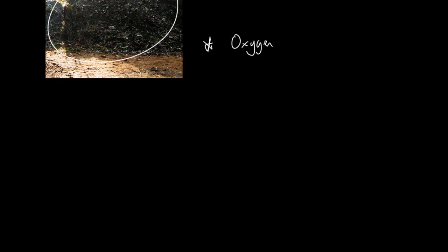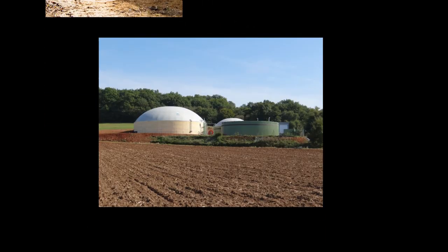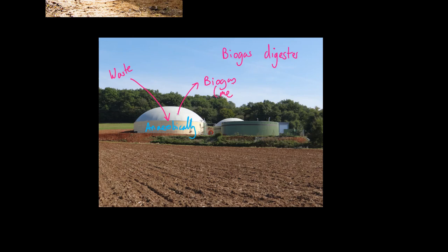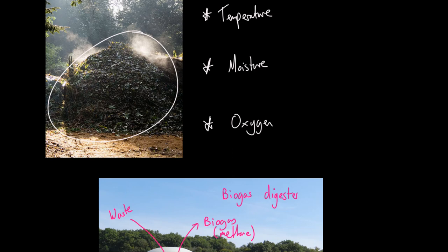That's important for lots of different reasons. For example, this is a biogas digester. Basically, if you own a farm, you put your animal feces — your waste — in there, and it gets digested anaerobically, that's without oxygen. What you get out is biogas — basically methane — which you can burn as a fuel. For the most part, compost heaps are aerobic processes, and the oxygen helps make them go faster.